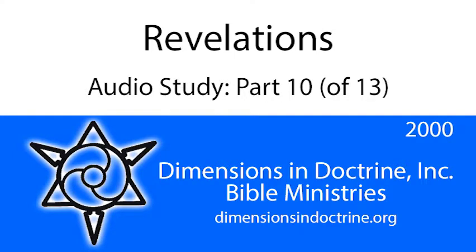For documentation, Genesis chapter 9, verse 11: 'I will establish my covenant with you; neither shall all flesh be cut off by the waters of a flood.' Verse 13: 'I do set my bow in the cloud. When I bring a cloud over the earth, the bow shall be seen in the cloud.' That means God promises with all of his character that he will not judge the earth in this fashion again.